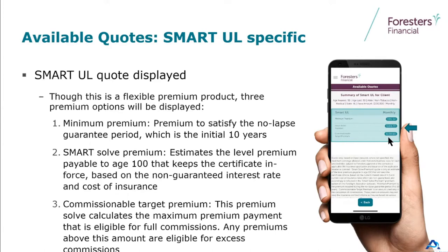I've done a couple of Smart ULs and I now know the difference between the smart solve and the commissionable target premium. The commissionable target premium is the maximum eligible for full commissions, whereas the smart solve estimates the level premium to carry to age 100. You'll see the same information, more in-depth, once you get on the EasyBiz site — you'll get all the ledgers you need and the signature page. But if you just want to get to a client real quickly, the mobile app is the way to go. And by the way, you can run all of our products on the mobile quote.